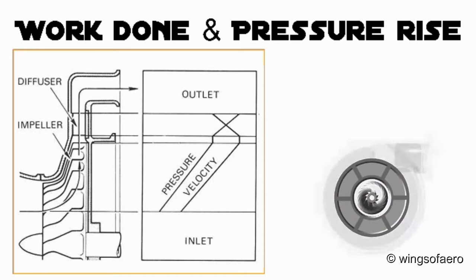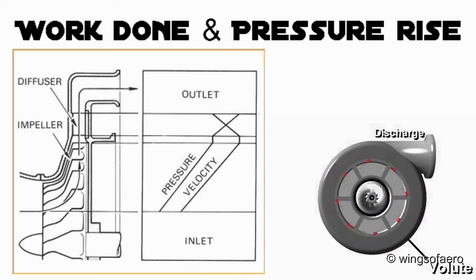Finally, the fluid moves from the diffuser blades into the volute casing, which is a passage of gradually increasing cross-section. This also serves to reduce the velocity of the fluid and to convert some of the velocity head into static head.